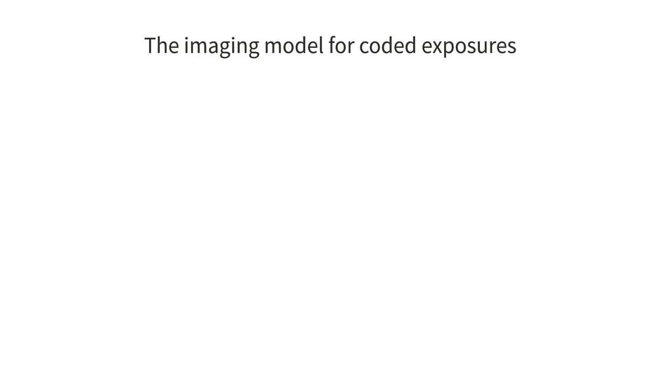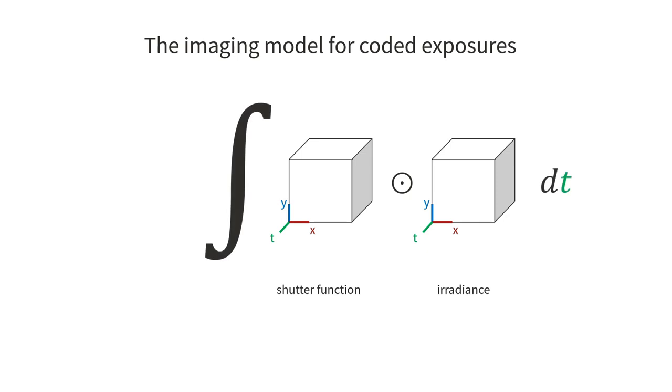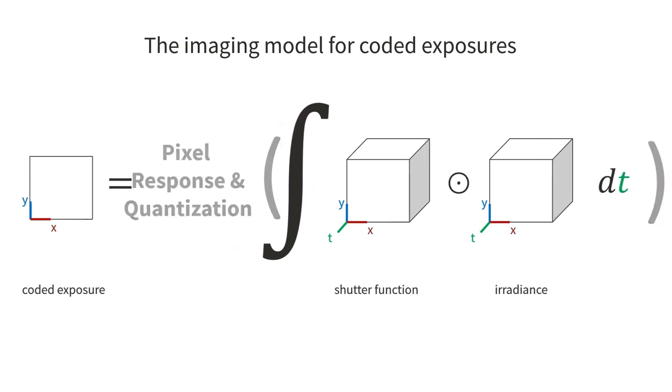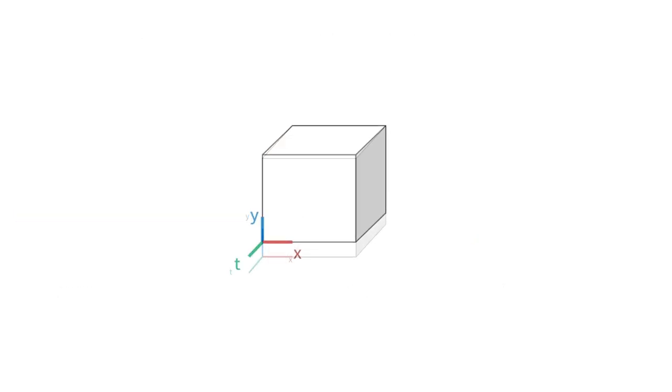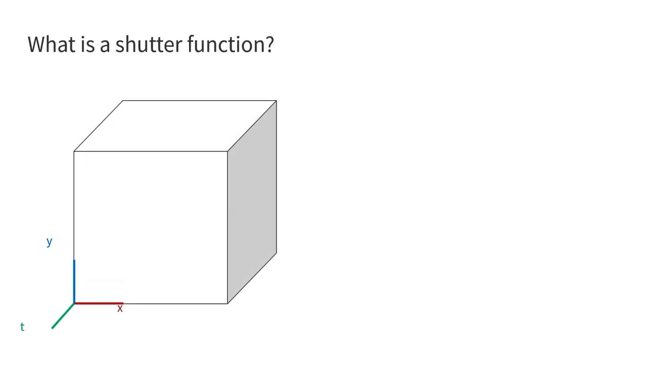In particular, we are interested in learning pixel-wise exposures and use the following imaging model to do so. The incoming radiance is modulated pixel-wise by a shutter function before being integrated, yielding the exposure. In practice, real sensors also include an eventual non-linear pixel response and some quantization process, that are both important to model. Let us have a closer look at those shutter functions.